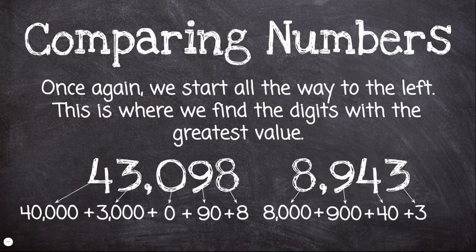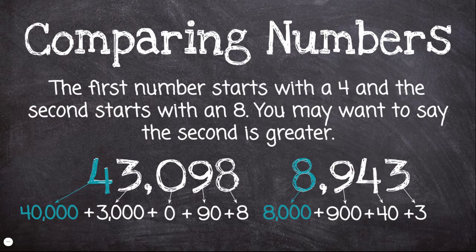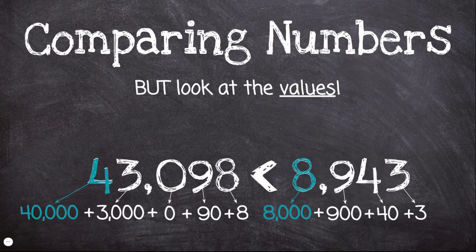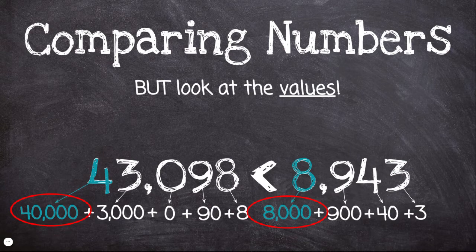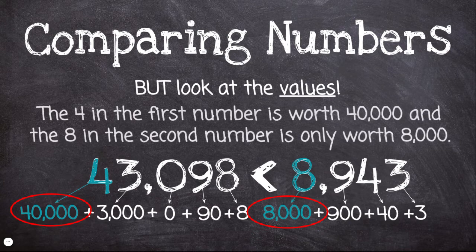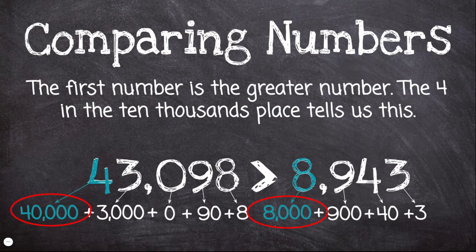Once again, we start all the way to the left — this is where we find the digits with the greatest value. The first number starts with a 4, and the second starts with an 8. You may want to say that the second number is greater, but remember we have to look at the values, not just the digits themselves. The 4 is worth 40,000, and the 8 is only worth 8,000. The first number, 43,098, is actually the greater number. The 4 in the ten thousands place tells us this — 40,000 is greater than 8,000.